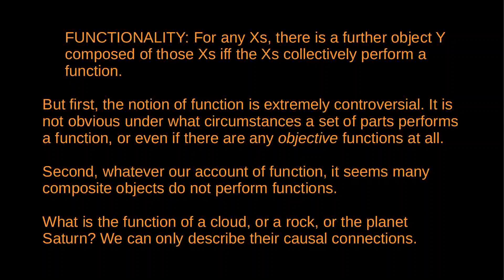This helps us to account for scattered objects, but it runs into some serious problems. The first difficulty is that this notion of function is extremely controversial — it's not at all obvious under what circumstances a set of parts performs a function. Indeed, it may be that there simply are no objective functions at all, and that attributions of function are just a matter of convention. I have a video on functions in biology where I outline a kind of conventionalist account. In any case, if we're appealing to this notion of function, we're going to have to do a lot of work to make it clear exactly what a function is and when a set of parts performs one.